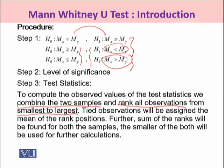When both samples are combined, all observations are ranked collectively. If there are ties in the data, the tied observations are assigned the mean of their rank positions. So wherever you have ties, you average those ranks and assign the mean rank to all tied observations. Once you have completed the rank assignments, compute the rank sums for both samples, then choose the smaller of the two rank sums for further calculation.